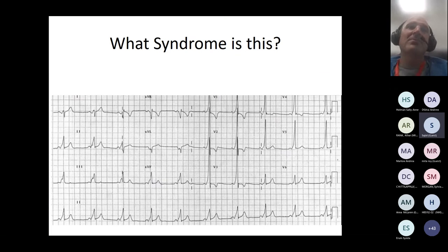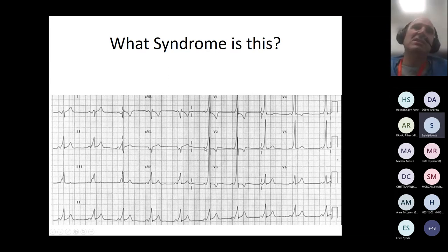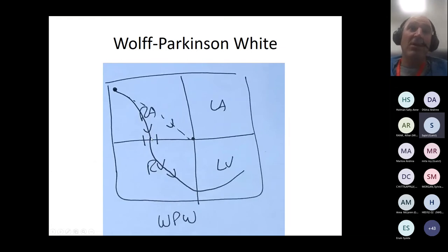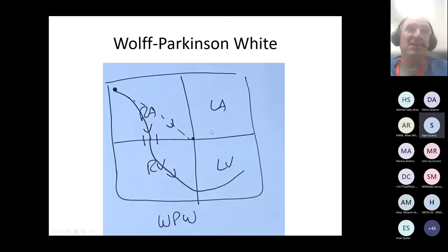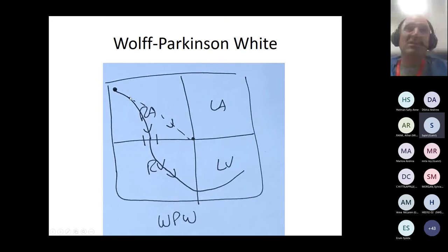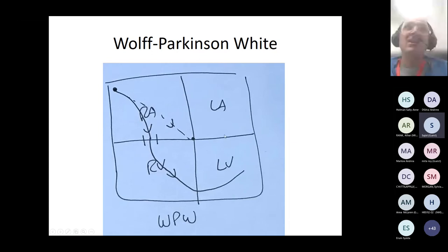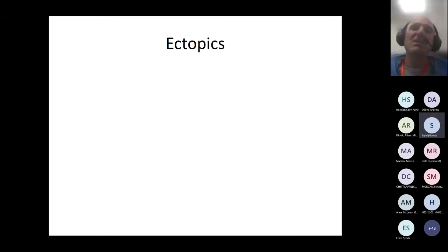This leads on to Wolff-Parkinson-White syndrome: you see a slurred upstroke — the delta wave — and a short PR interval. In WPW there is an accessory pathway that conducts forward, as opposed to the reentrant tachycardia where it conducts backwards. It is possible it could conduct both ways. With WPW, there could be a normal ECG because the impulse may go through the AV node rather than the accessory pathway — it's a lottery. The accessory pathway could be on either the right or left side.